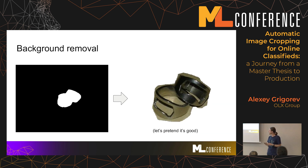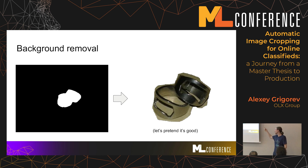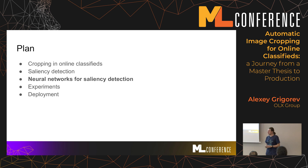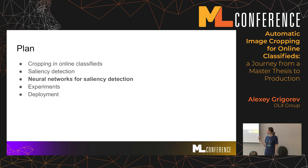One of the applications of saliency detection is image background removal — a neural network should do this better than manual methods. But we didn't experiment with background removal; this is just one of the use cases of saliency detection. Of course, nowadays everything is possible to do with neural nets, and saliency detection is not an exception.